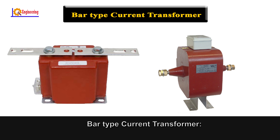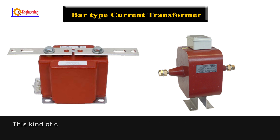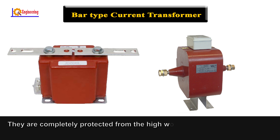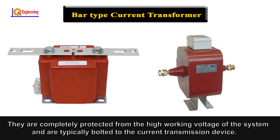Bar type current transformer: This kind of current transformer utilizes the actual cable or bus bar of the main circuit as the primary side winding, which is equal to a single turn. They are completely protected from the high working voltage of the system and are typically bolted to the current transmission device.